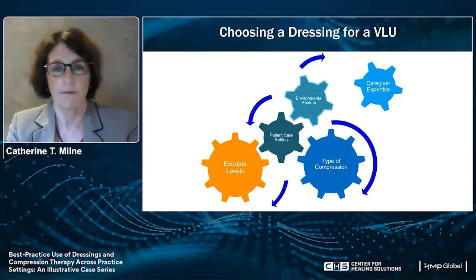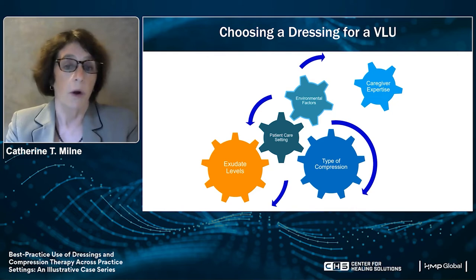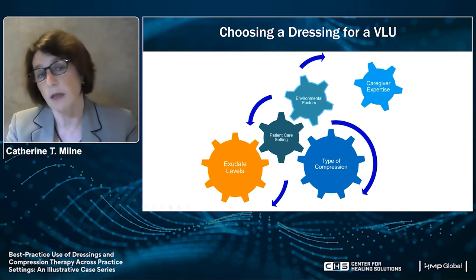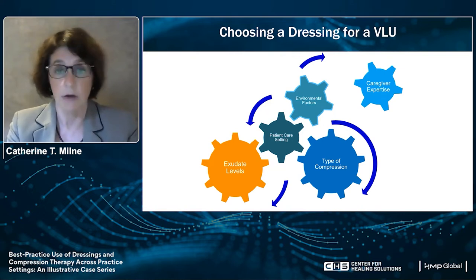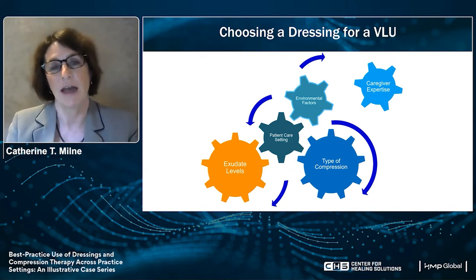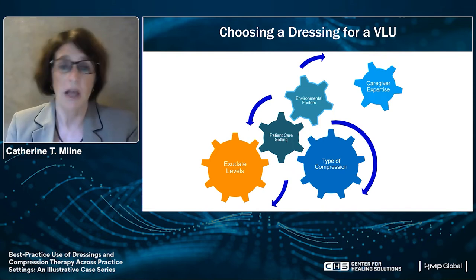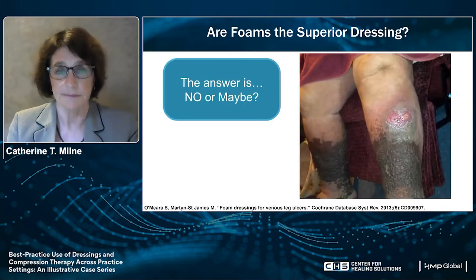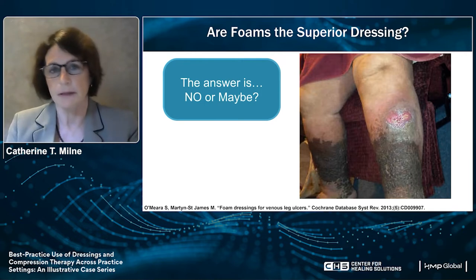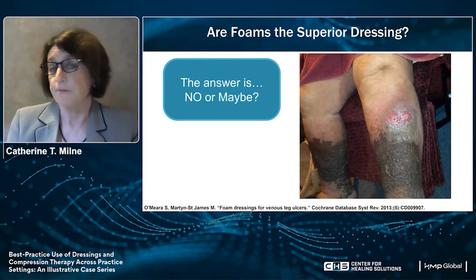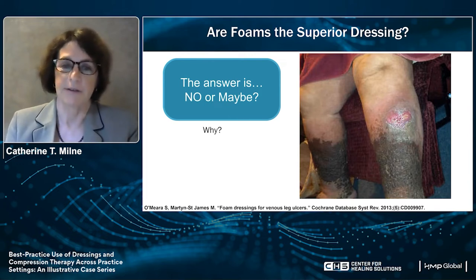Choosing a dressing for a venous leg ulcer is very difficult. You have to consider what type of compression you're using, environmental factors — is it hot or cold, are they at home? — what exudate level they have, and who's managing the dressing. The application tension will vary from clinician to clinician and impact the patient. The real question is: are foams the superior dressing? A lot of people think they might be. The answer is: it depends. When you look at the evidence, it was really low quality. The last comprehensive review was in 2013, and half the RCTs had a risk of bias.